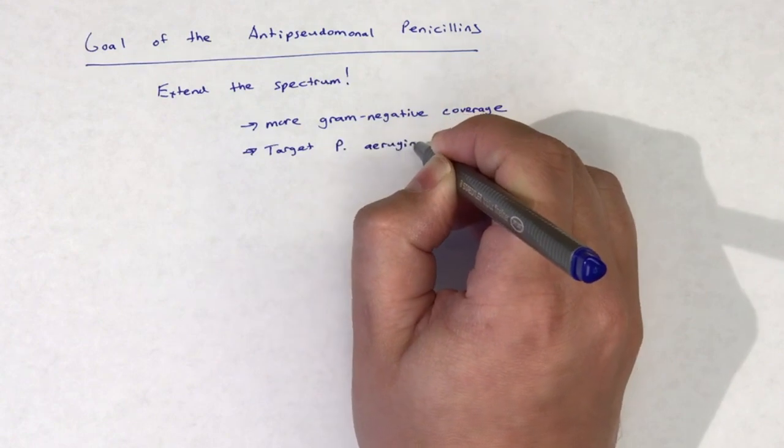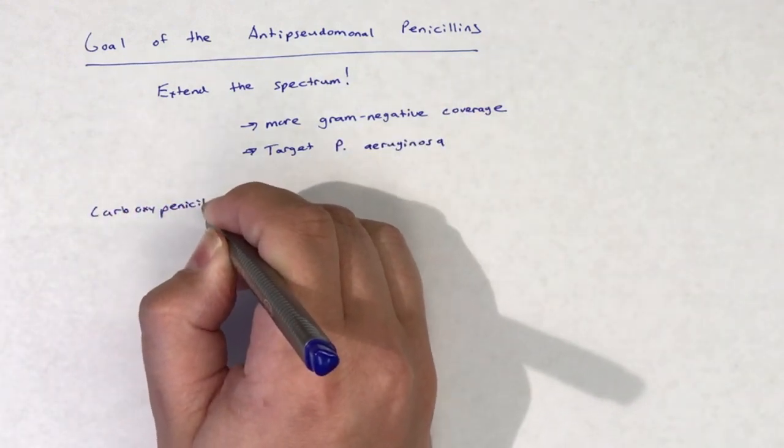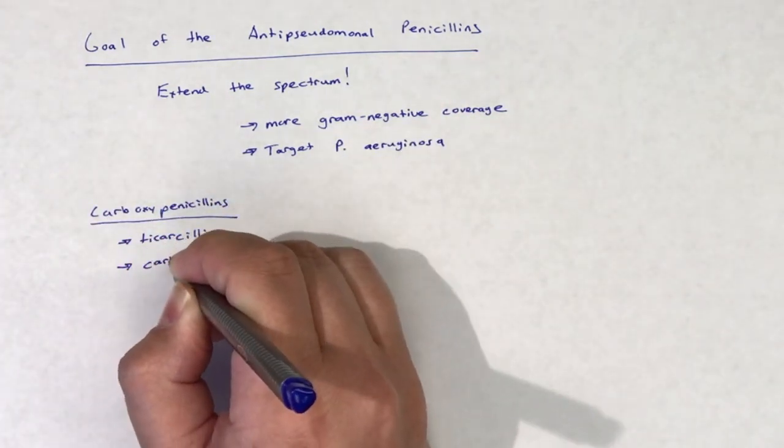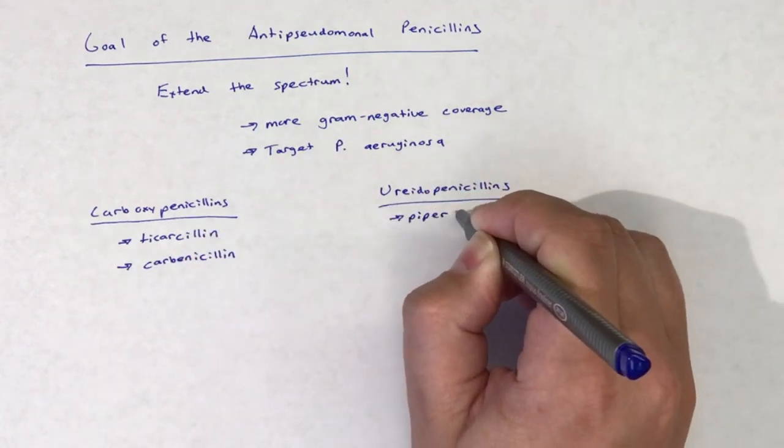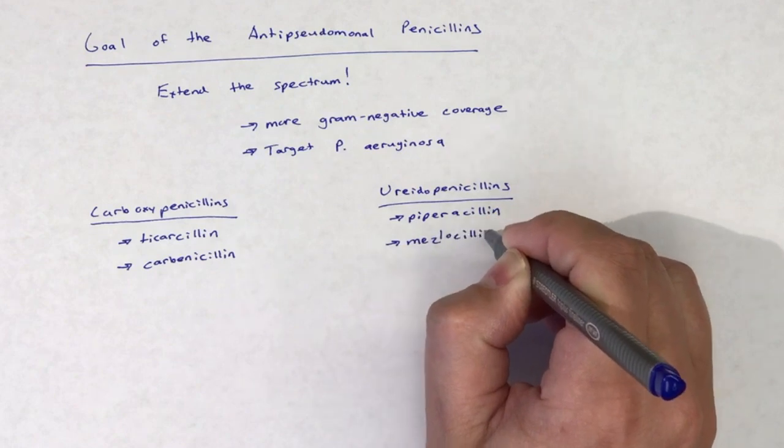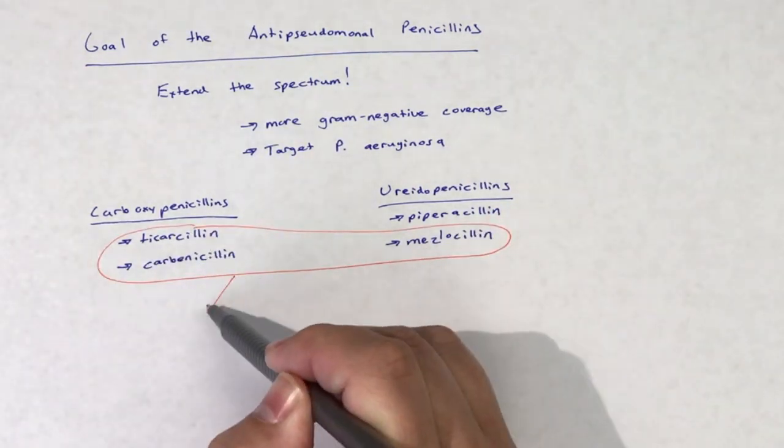These penicillins are also referred to as carboxypenicillins and ureidopenicillins. The carboxypenicillins include ticarcillin and carbenicillin, while the ureidopenicillins include piperacillin and mezlocillin.